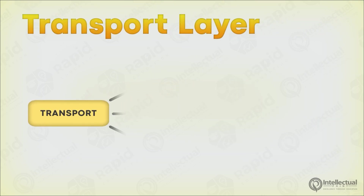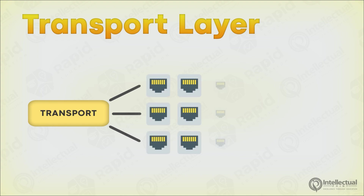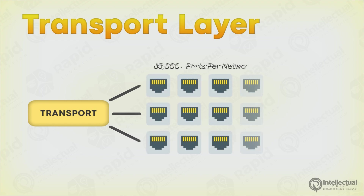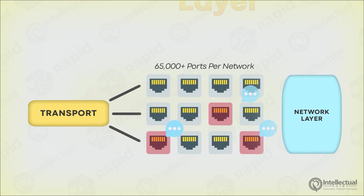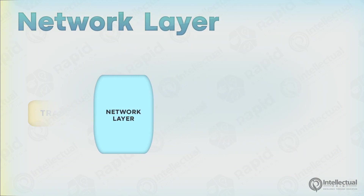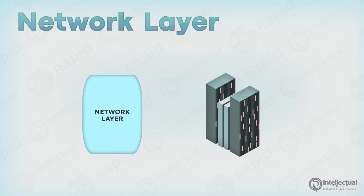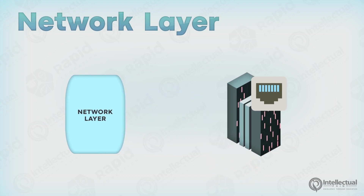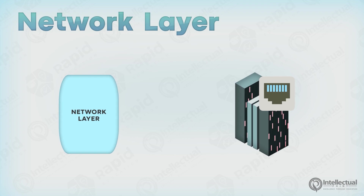The transport layer creates roughly 65,000 ports per network connection on your computer. Applications can reserve ports to send a message that is received and processed by the network layer. Once through the network layer, the message gets sent to the destination port that is determined by the application. However, there's more to it than that.